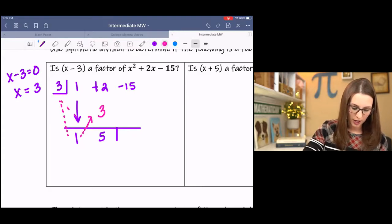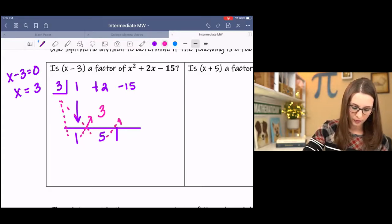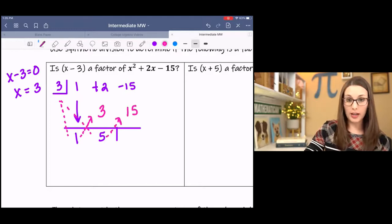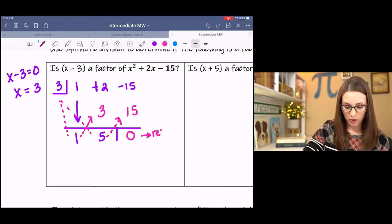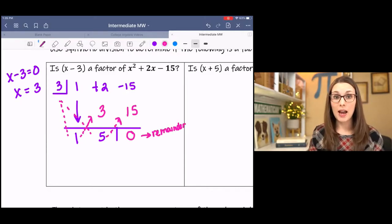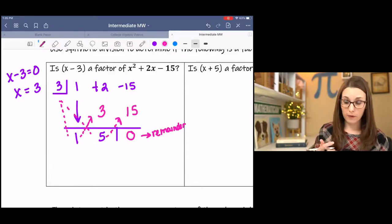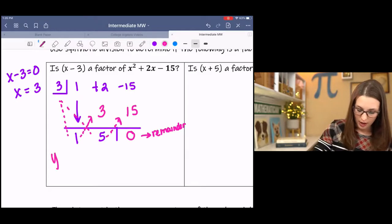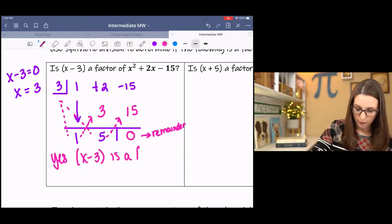Then multiply down. That's 15. Negative 15 plus 15 is 0. This is my remainder. Which means that x minus 3 divided evenly. And that indicates that it is a factor. Yes. x minus 3 is a factor.